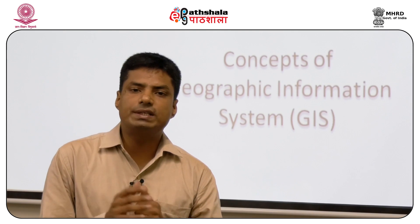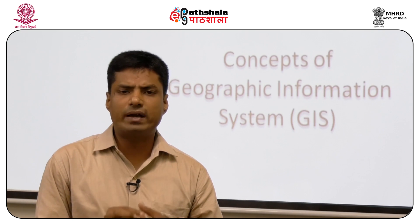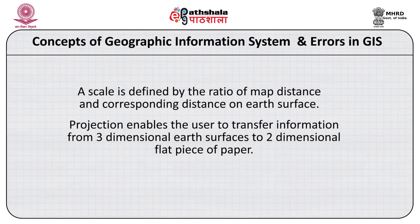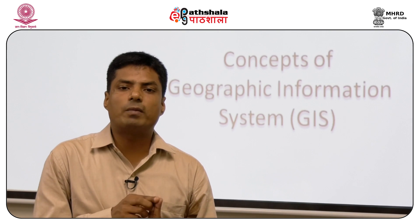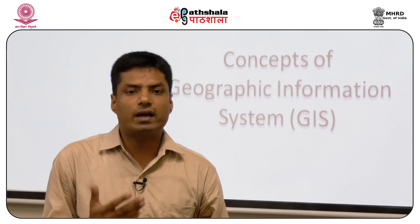When mapping through GIS, two things are very important. First is scale — the relationship or ratio between the distance shown on the map and the actual distance on the ground surface. Second is projection — a method through which we represent three-dimensional earth surface features on a two-dimensional plane. These two things, scale and projection, are very paramount when we map through GIS.